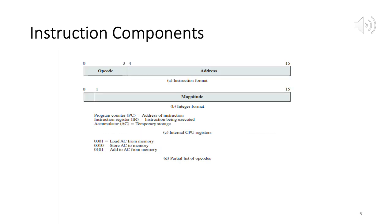Now on slide 5: instruction components. Each instruction or piece of data is represented internally in binary format. We have two formats: one for an instruction and one for data, both stored in 16 bits — though modern machines are 32-bit and 64-bit as well.